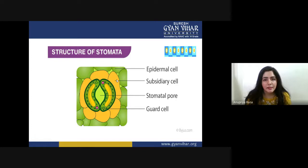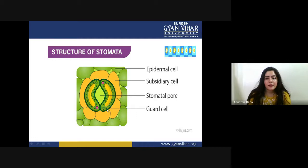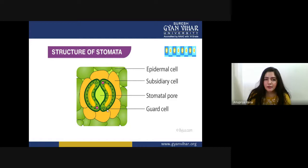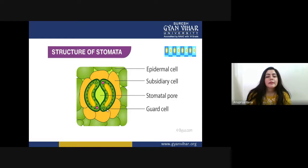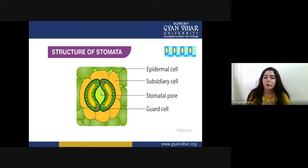Subsidiary cells also have a very important role in how the stomata will open and close. After the subsidiary cell, the green kidney-like structure is our guard cell. They are green because they have chloroplasts — the chlorophyll pigment is present inside these guard cells, so they can perform photosynthesis as well. In the center is the stomatal pore, which is the main focus of the whole structure, as all gaseous exchange and transpiration occur through this stomatal pore.